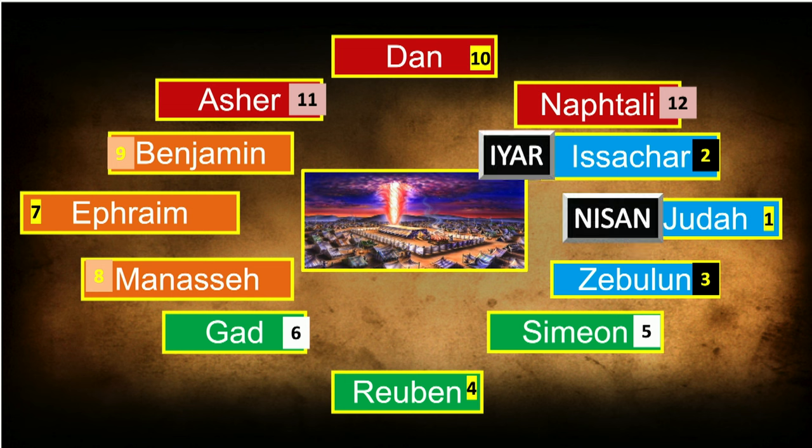Issachar is designated for this month, and the gemstone representing Issachar on the breastplate was a sapphire — a very dark blue, almost black. In Exodus 24:10, Moses goes up with Aaron, Nadab, Abihu, and 70 elders. They saw the God of Israel, and under his feet was a paved work of sapphire stone and as it were the body of heaven in its clearness. The sapphire is like the first level of heaven.